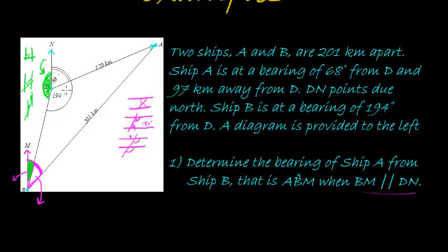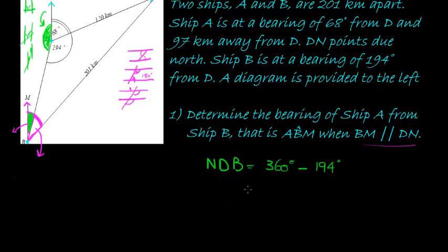If this was a full circle it would be 360, so we can say that angle NDB is equal to 360 degrees minus the portion — in other words, the full circle minus this portion here minus 194 degrees. So 360 minus 194 gives me 166 degrees.